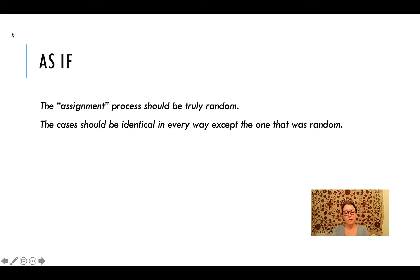What Posner does do well is make the case that the two ethnic groups are similar in every other way he could think of. He addresses a wide variety of alternate explanations, which strengthens his theory that the size of the group is what matters.